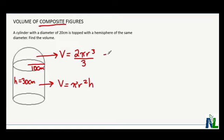It's just a matter of plugging in your numbers into your calculator. So 2 times π—if you don't have a π button, you can use 3.14—times our radius, which is 10, cubed, all over 3.